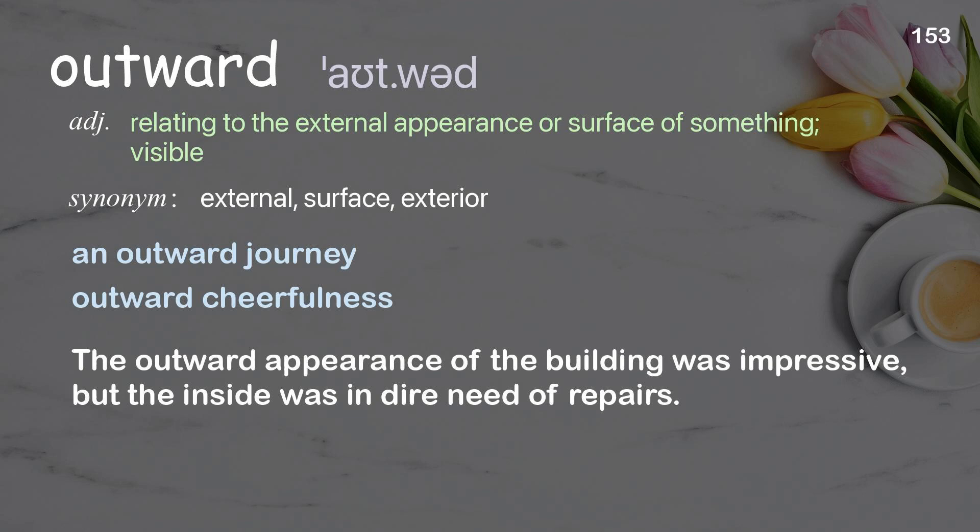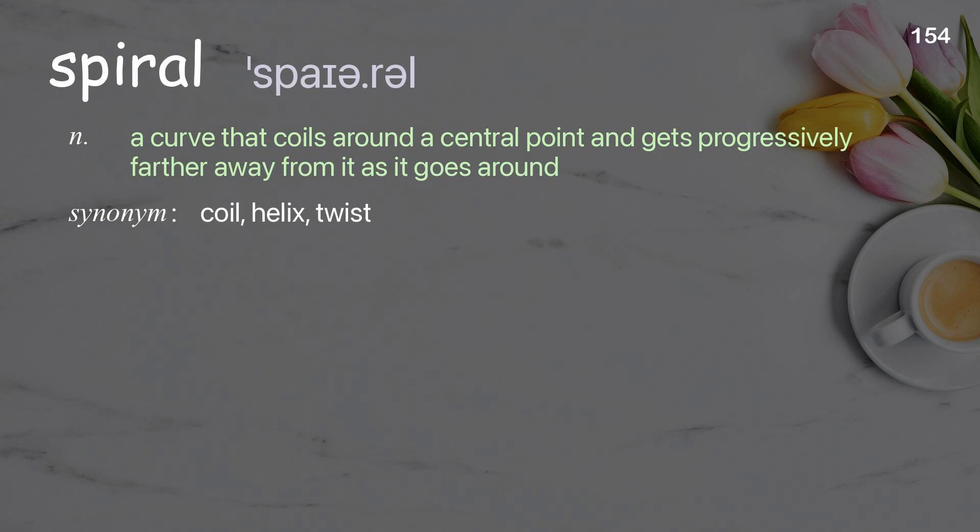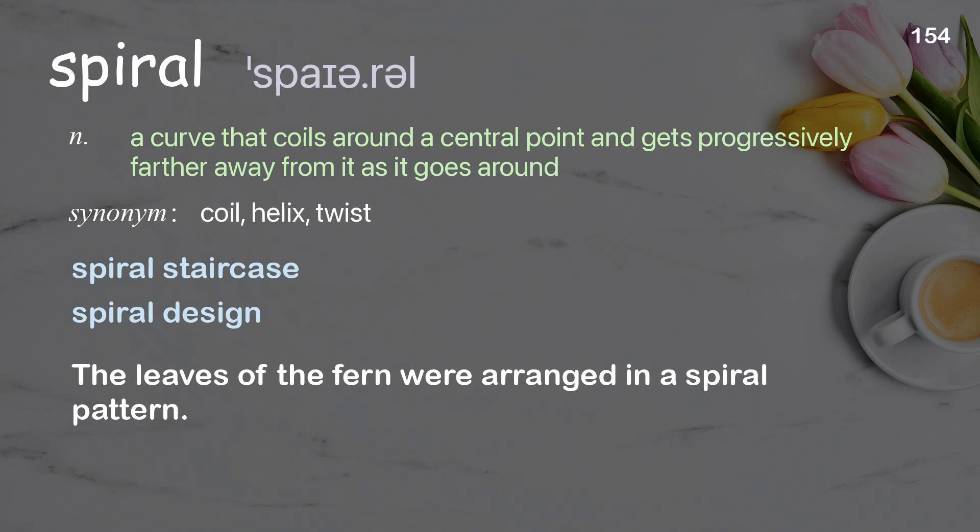Spiral: a curve that coils around a central point and gets progressively farther away from it as it goes around. Examples: spiral staircase, spiral design. The leaves of the fern were arranged in a spiral pattern.